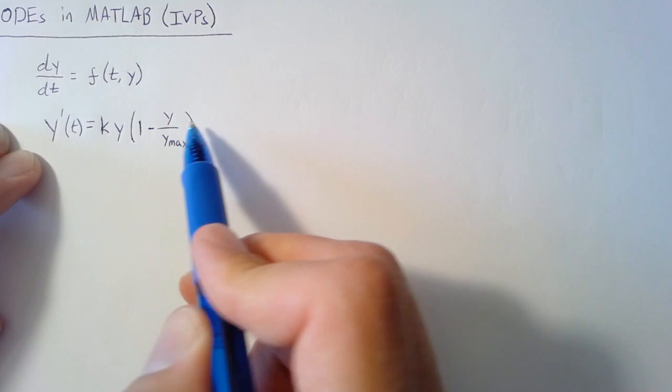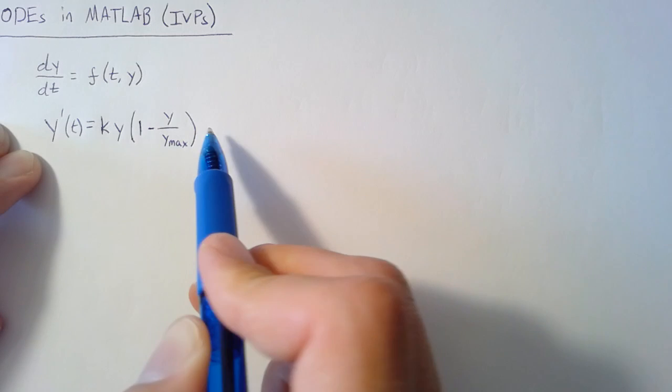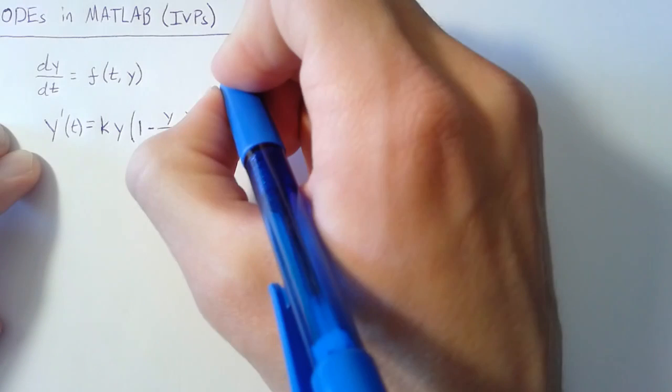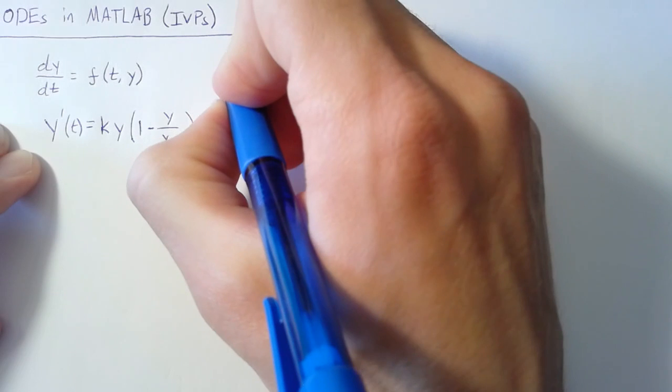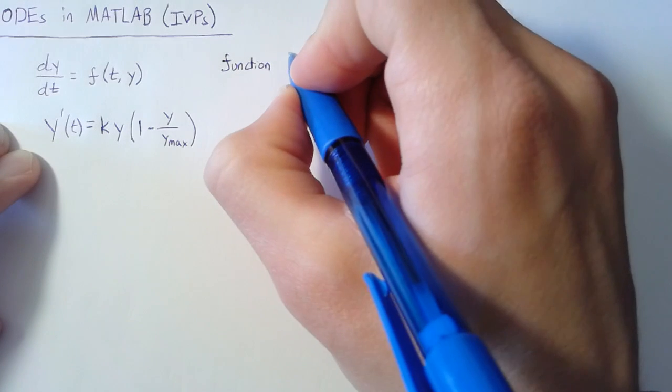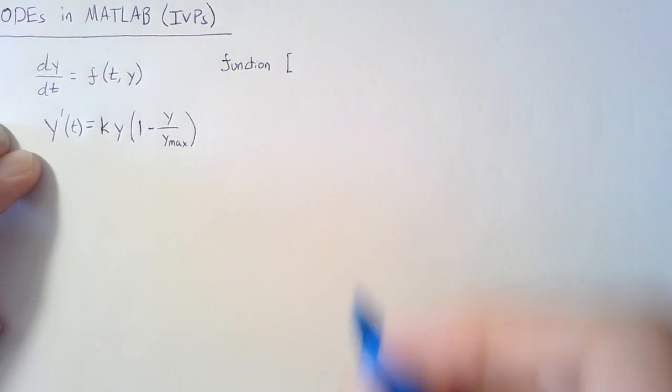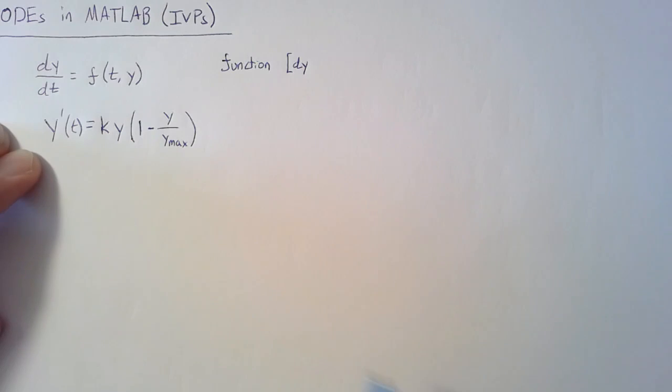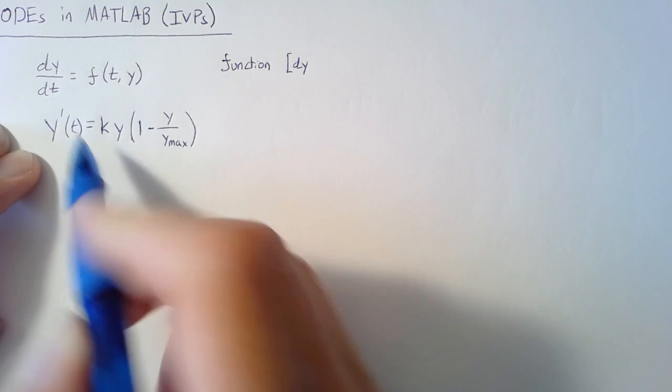The first step is actually writing this as a MATLAB function. If we create a new file, we can make it a function by adding the function keyword. We need our output variables, which we're going to name dy, simply meaning the y primes.